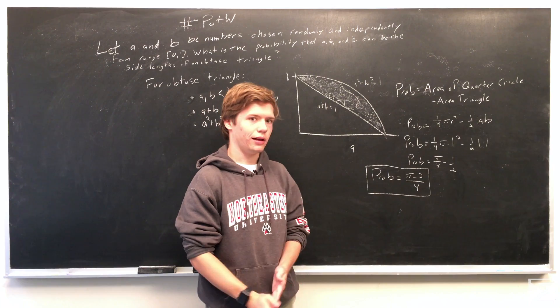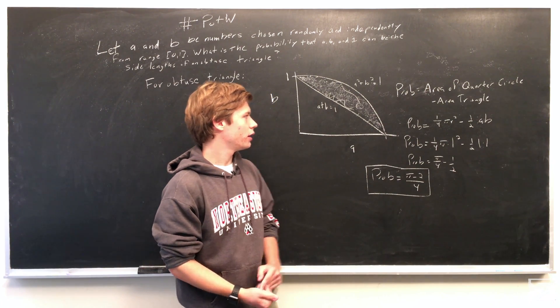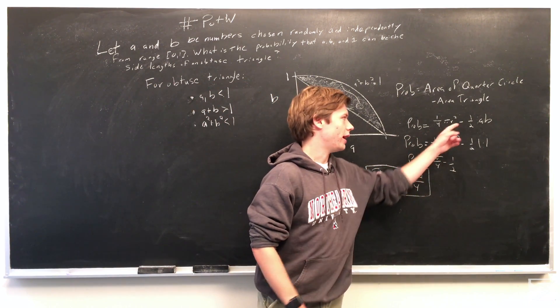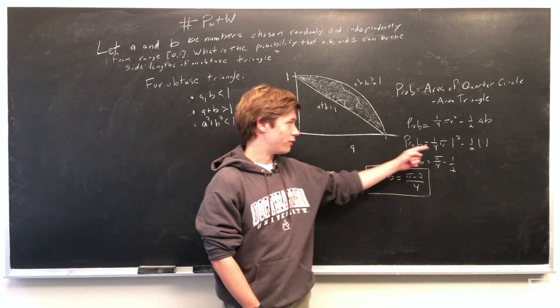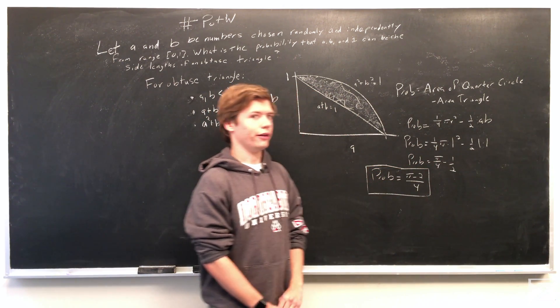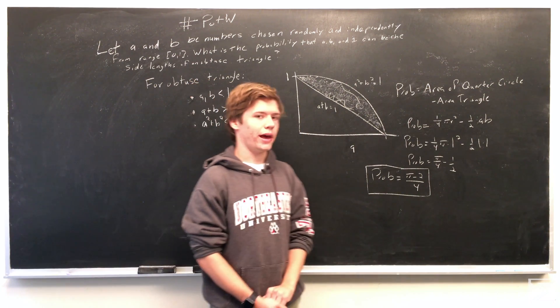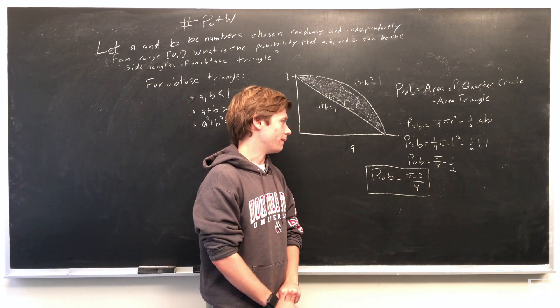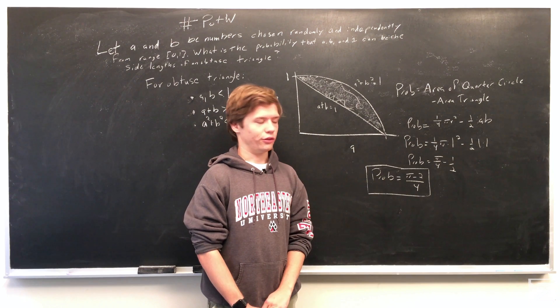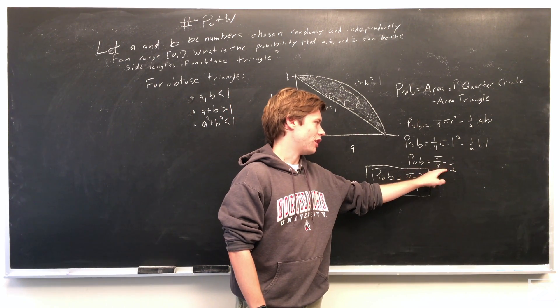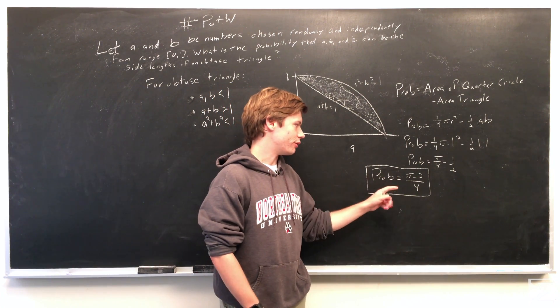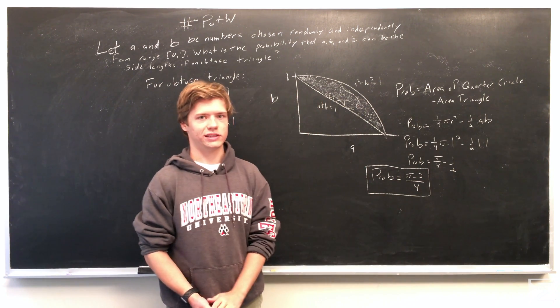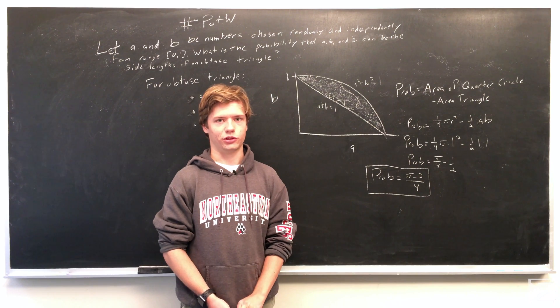So it's a simple plug and chug. We have 1 as the radius and 1 as A and B. So we find that the area of the circle is pi over 4 and the area of the triangle is 1 half. So all you have to do from there is just make this fraction have a common denominator, and we see the probability is equal to pi minus 2 over 4 for the side lengths A, B, and 1 forming an obtuse triangle.